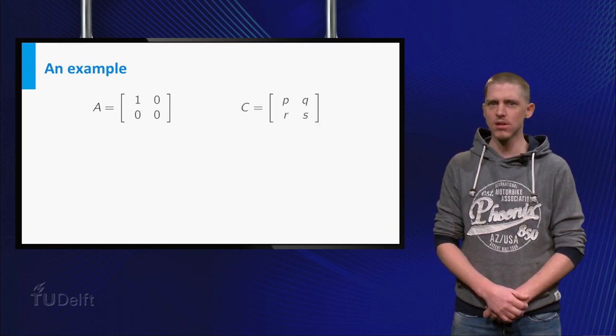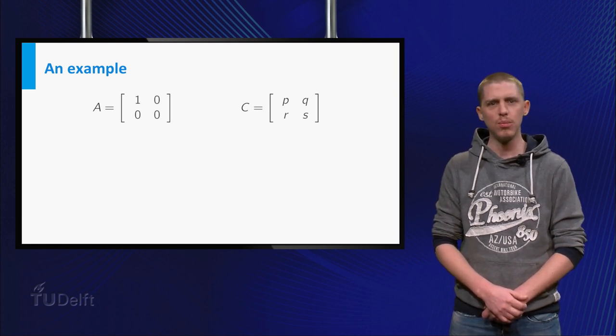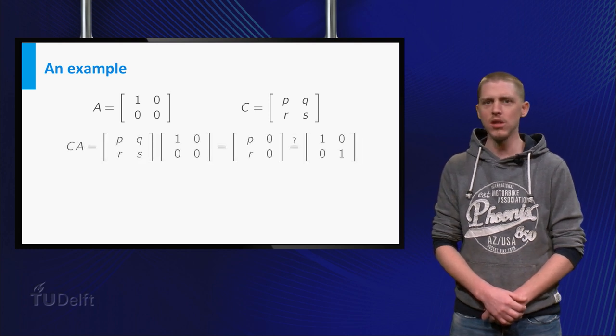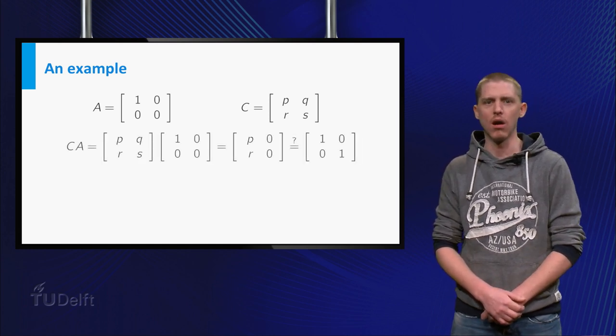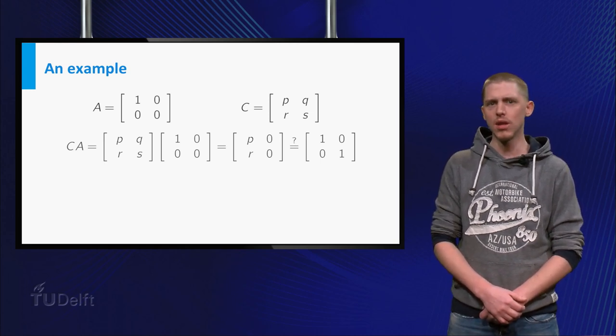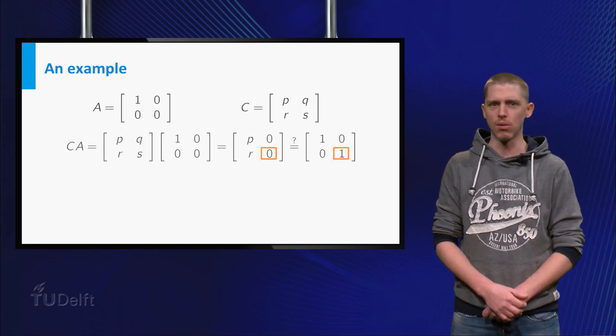If C exists, it should be 2 by 2, so it would be of the shape P, Q, R, S. The product of C and A is P, 0, R, 0. If you want this to be equal to the identity matrix, you see that this can never happen because of the zero at the lower right corner.